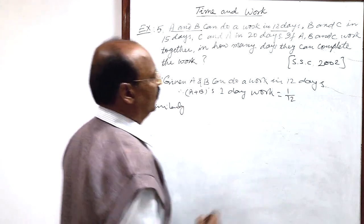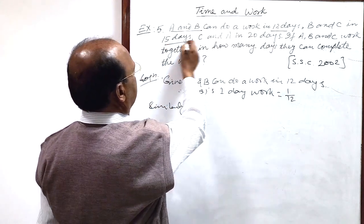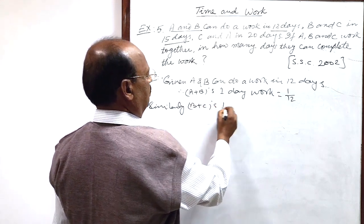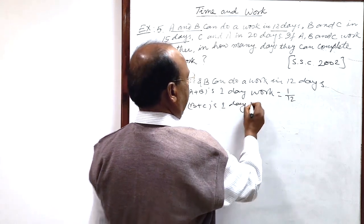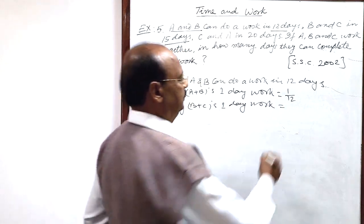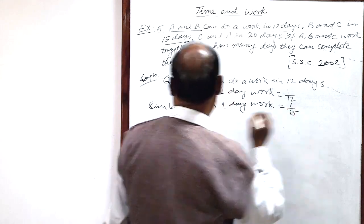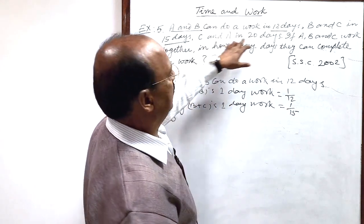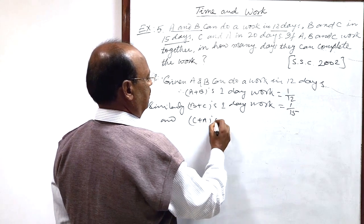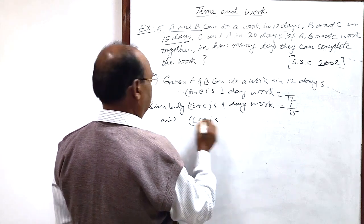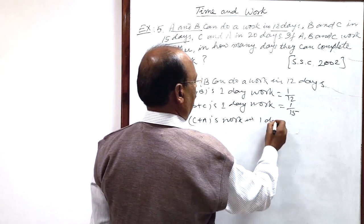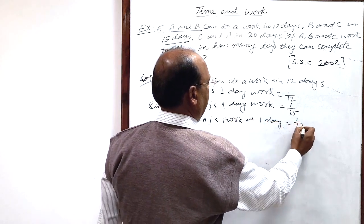Similarly, B and C in 15 days, so therefore B plus C's one day work is equal to 1 by 15, and C and A in 20 days, so C plus A's work in one day is equal to 1 by 20.